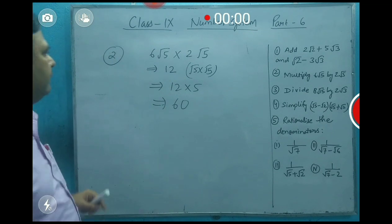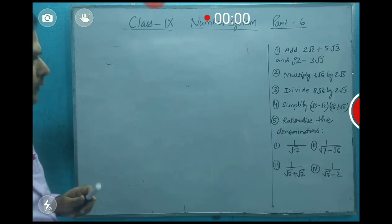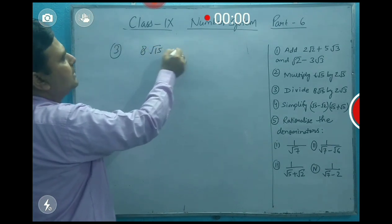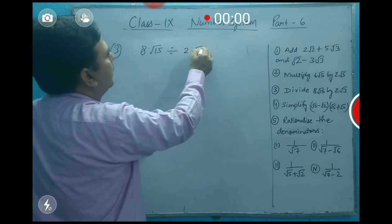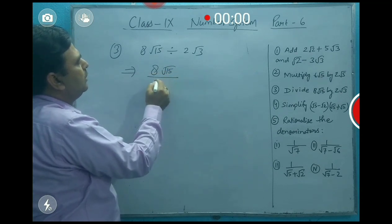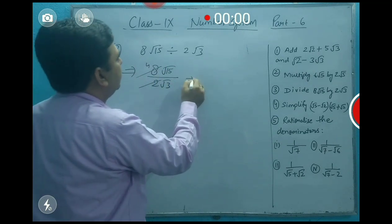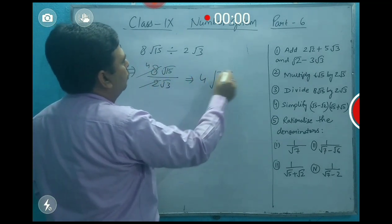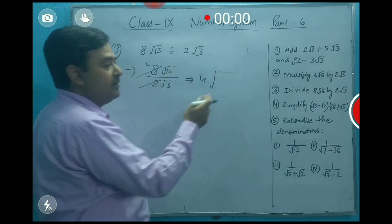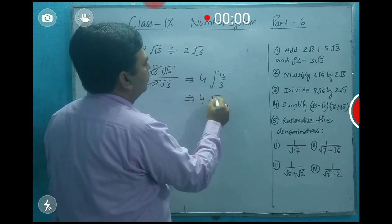In the next part, division is given. If √15 is divided by 2√3, we can write it as (1/2) × √(15/3), and 15 ÷ 3 = 5, so you will get (1/2)√5 as the result.